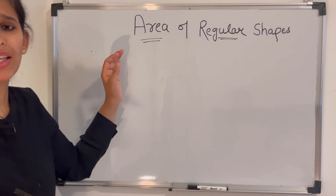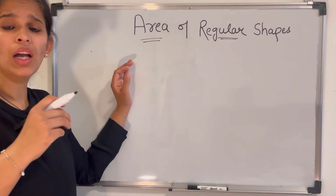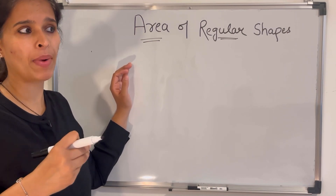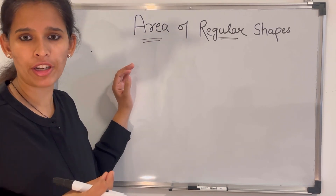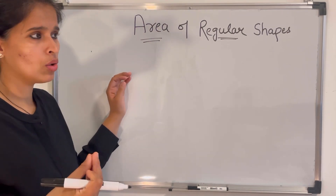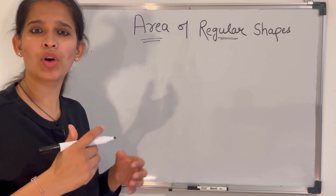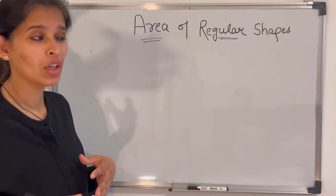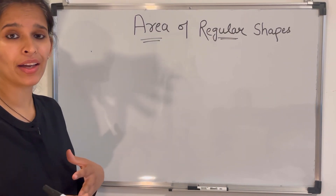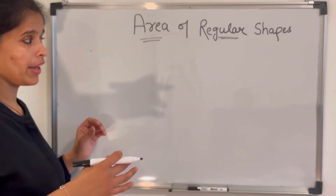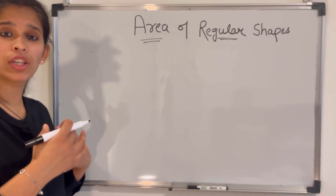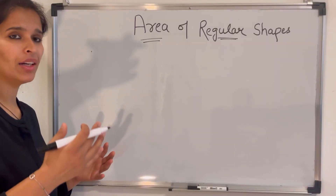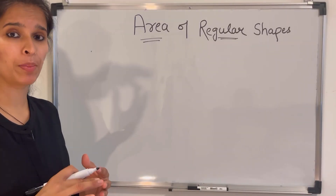Now, what is area? Area means the amount of surface enclosed by a closed figure. You must have heard: what is the area of your house, or what is the area of this field? Area means the amount of surface occupied by that place.